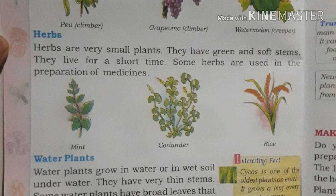Another type of plants are herbs. Herbs are very small plants. They have green and soft stems. They live for a short time. Some herbs are used in the preparation of medicines. Herbs have green and soft, very thin stems.